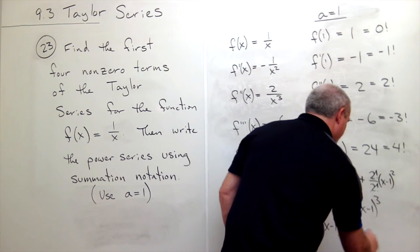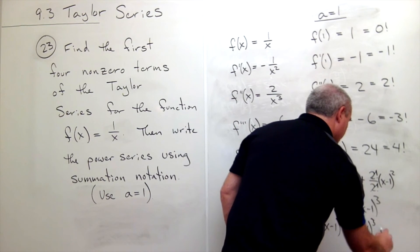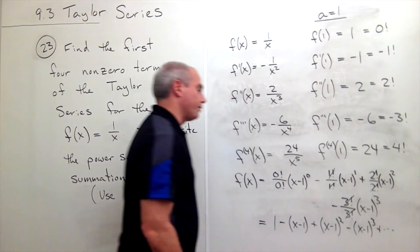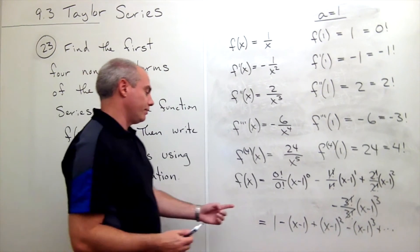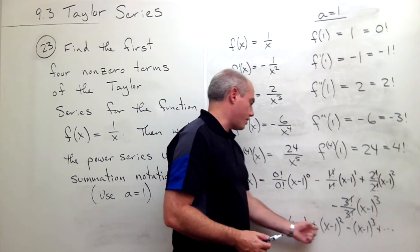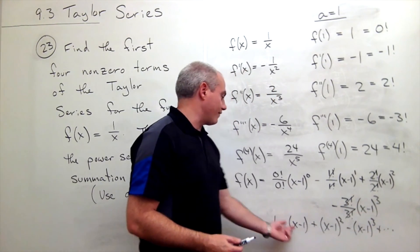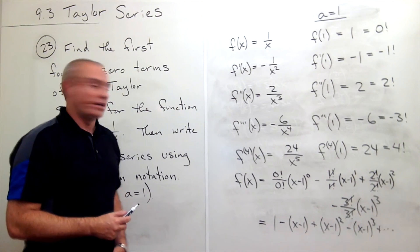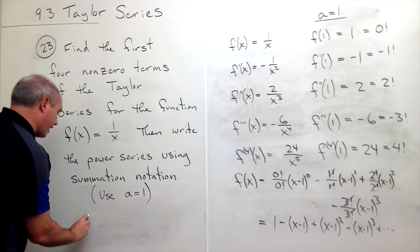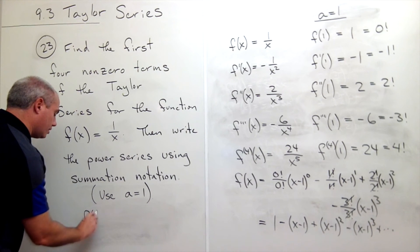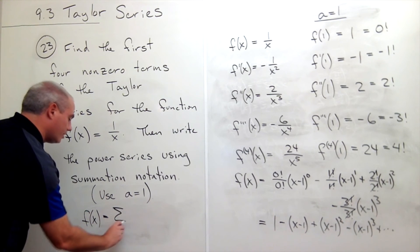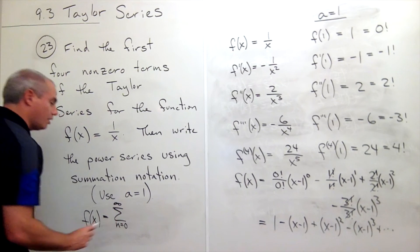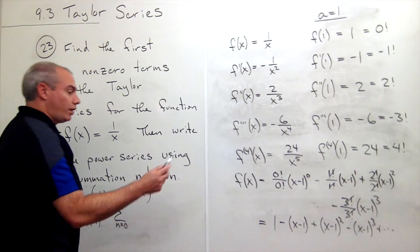And so on. And I think now we see the pattern—we go plus, minus, plus, minus, and we just have increasing powers of x minus 1. So I can write it this way: that f of x is equal to the sum going from 0 to infinity of, well first of all it alternates, so I get negative 1 raised to the n.